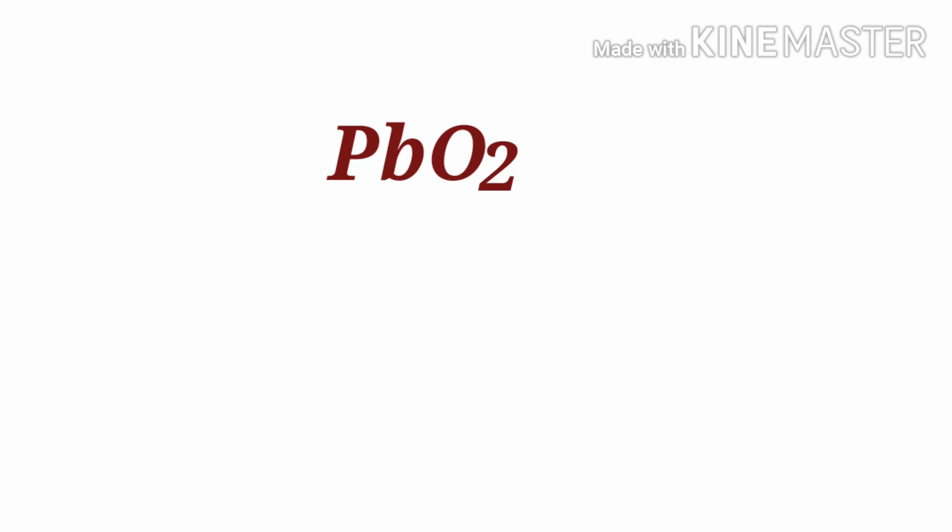We can use the oxidation number rules to determine oxidation numbers. Plumbic oxide is a neutral compound with overall oxidation number 0. Therefore, we know that the sum of the oxidation number of atoms is equal to 0.